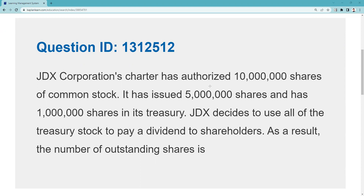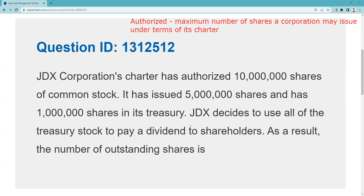For that, Kaplan allows me to give you a free look at Kaplan content. This is QID 1312512 — I'll link this to my equity lecture where I go over this at length, and I'll put it in the SIE and Series 7 playlists. JDX Corporation is chartered. When we have a corporation as our business structure, we get a corporate charter, and in that charter we have the number of shares that are authorized.